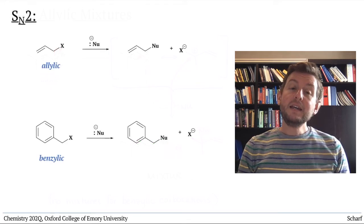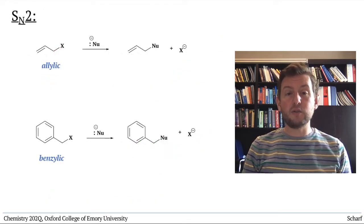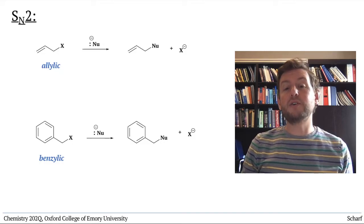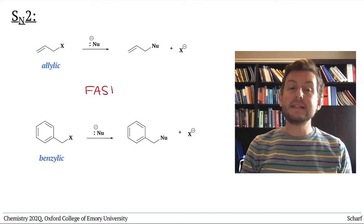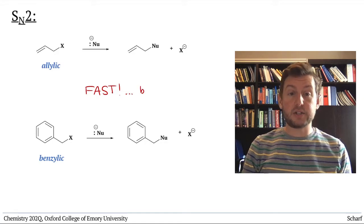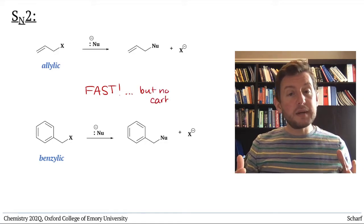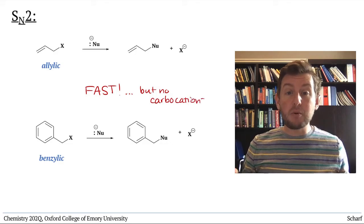It turns out that allylic and benzylic leaving groups also undergo faster-than-expected SN2 reactions, even though these reactions don't involve carbocations.